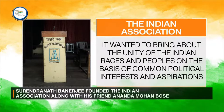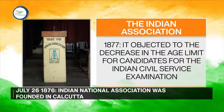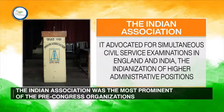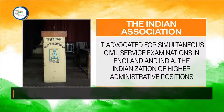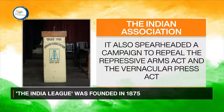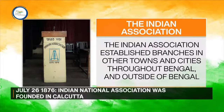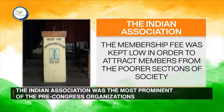It wanted to bring about the unity of the Indian races and peoples on the basis of common political interests and aspirations. It objected to the decrease in the age limit for candidates for the Indian Civil Service Examination in 1877. The Association advocated for simultaneous civil service examinations in England and India, as well as the Indianization of higher administrative positions. It also spearheaded a campaign to repeal the Repressive Arms Act and the Vernacular Press Act, and established branches throughout Bengal and beyond, keeping membership fees low to attract members from poorer sections of society.